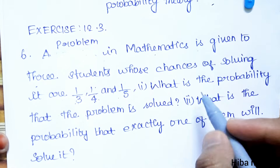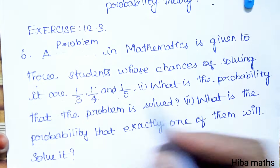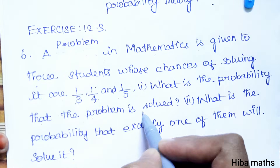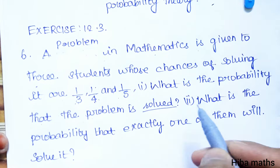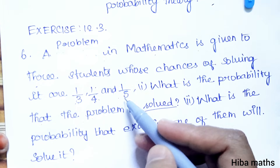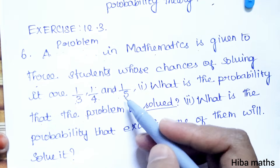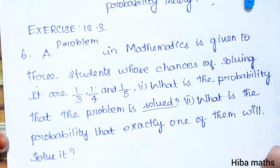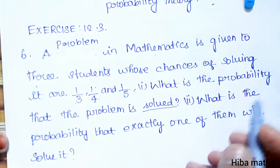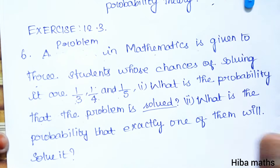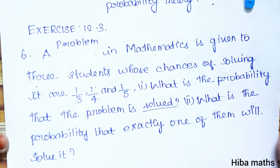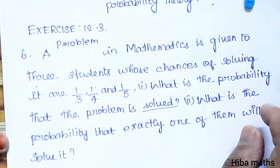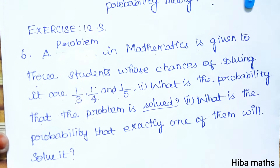Now, question again: what is the probability that the problem is solved? You have to solve it. So the problem is solved — if at least one of the three answers the question, that problem is solved.